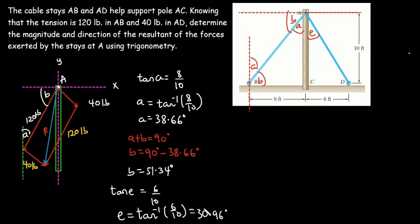So that's the value of angle E. Now we have found angles A, B, and E, which will make the calculation easy. Next, we need to find the value of angle F, which is the angle opposite to the resultant force. If we can find this angle, finding the resultant force will be straightforward.